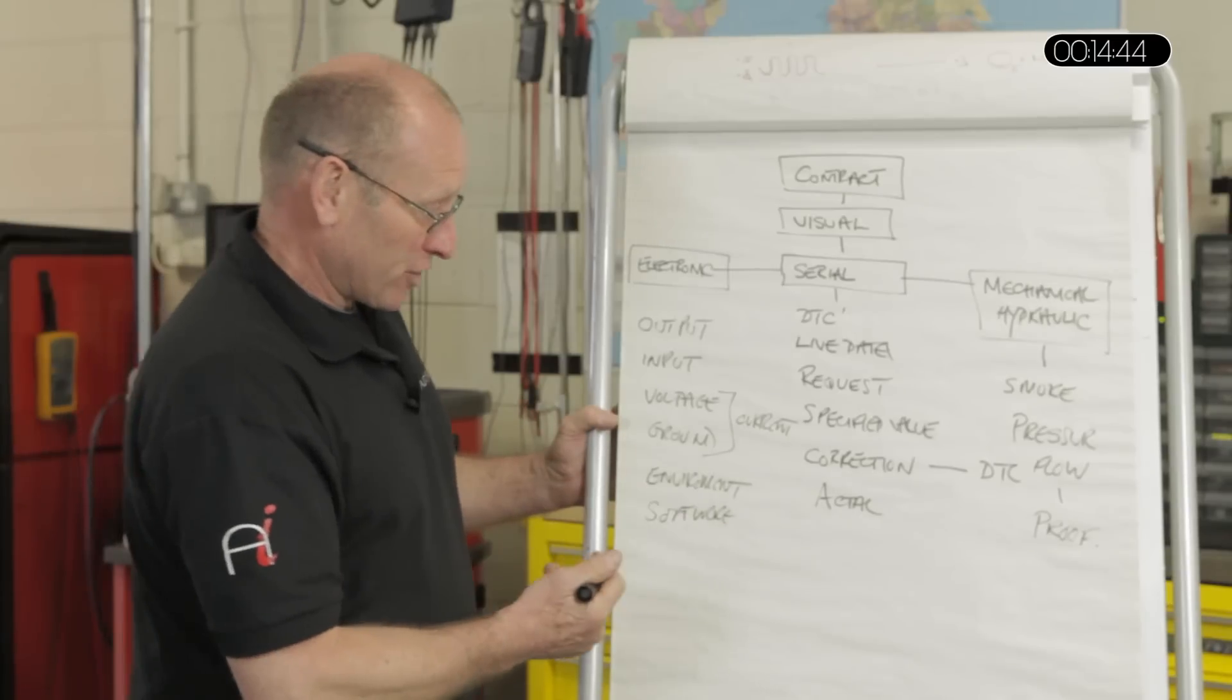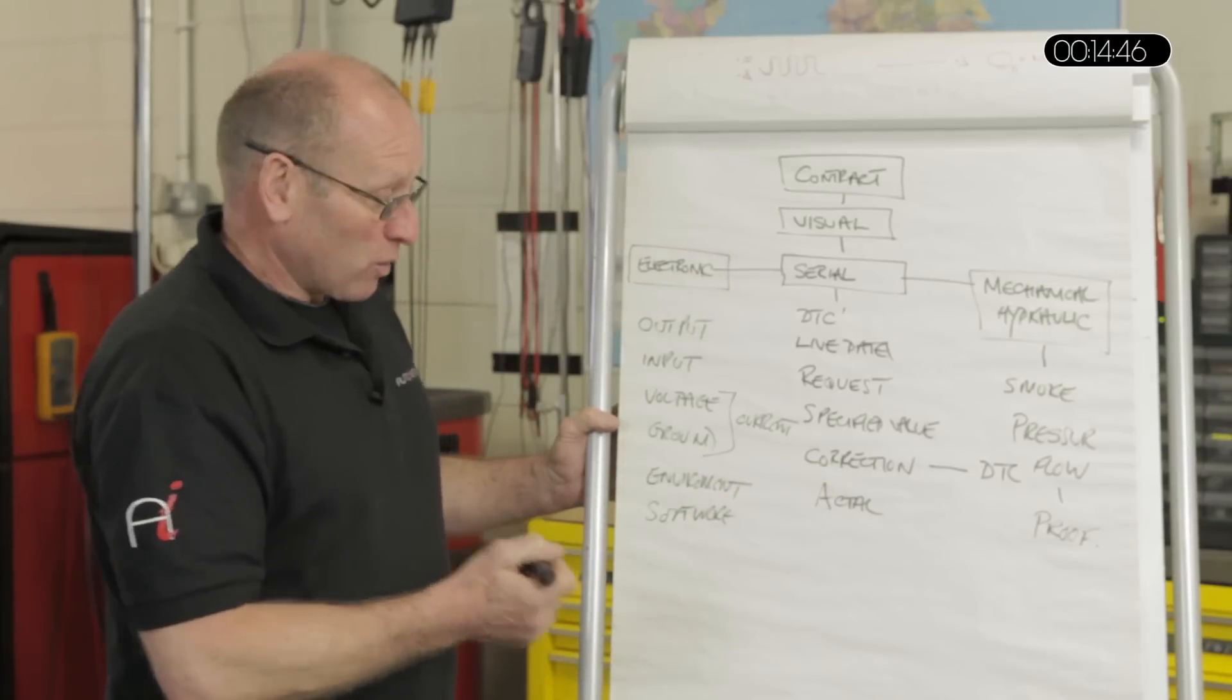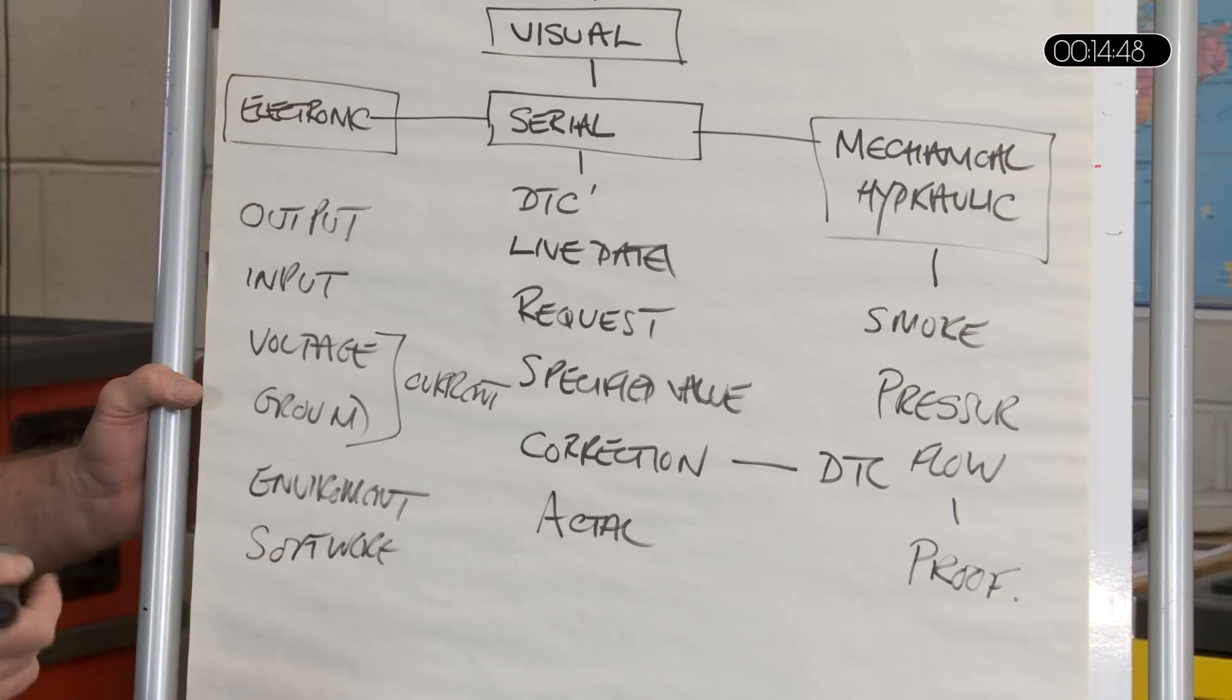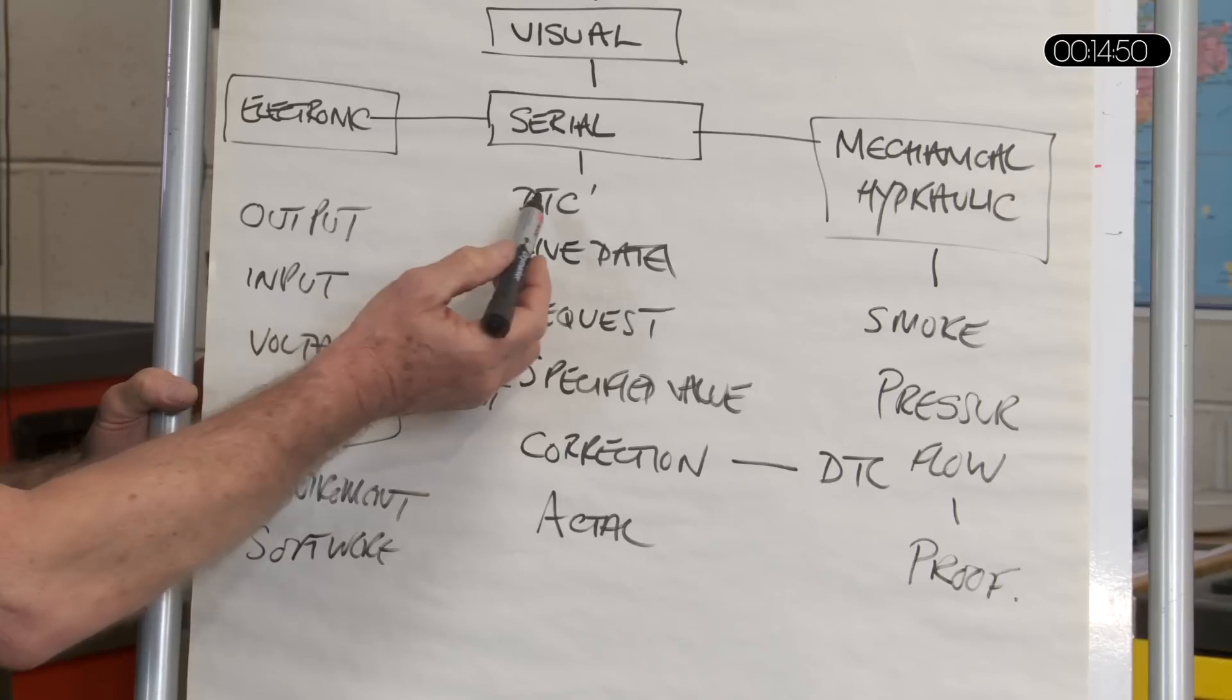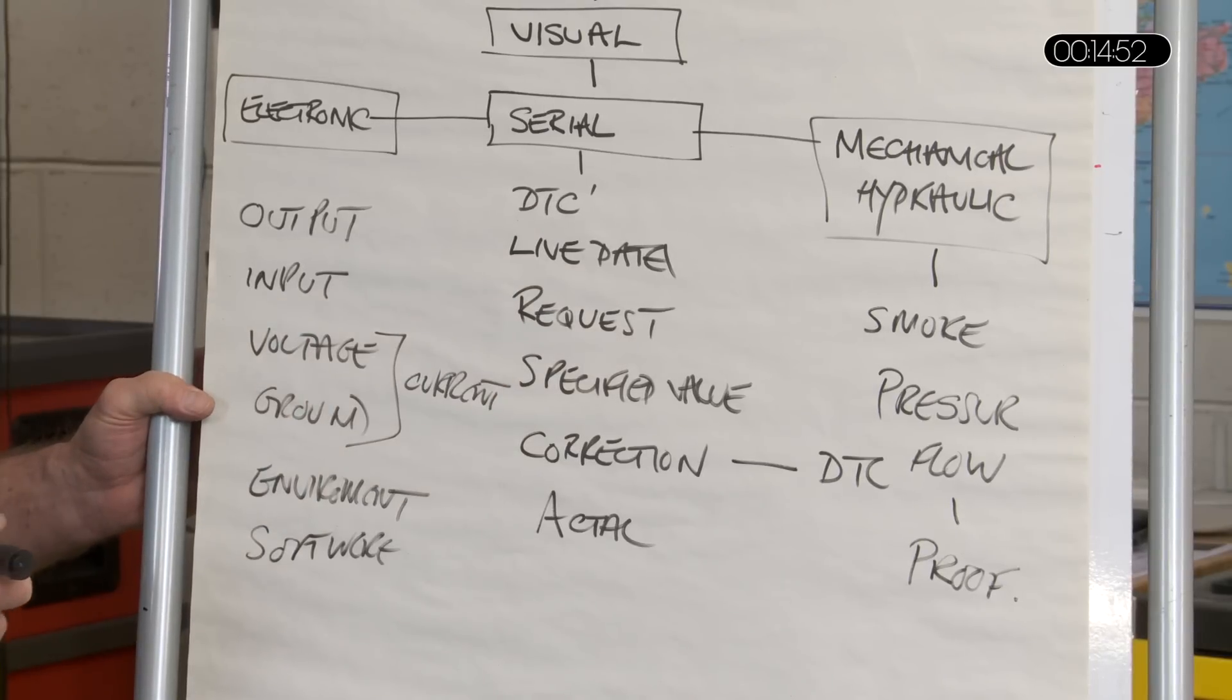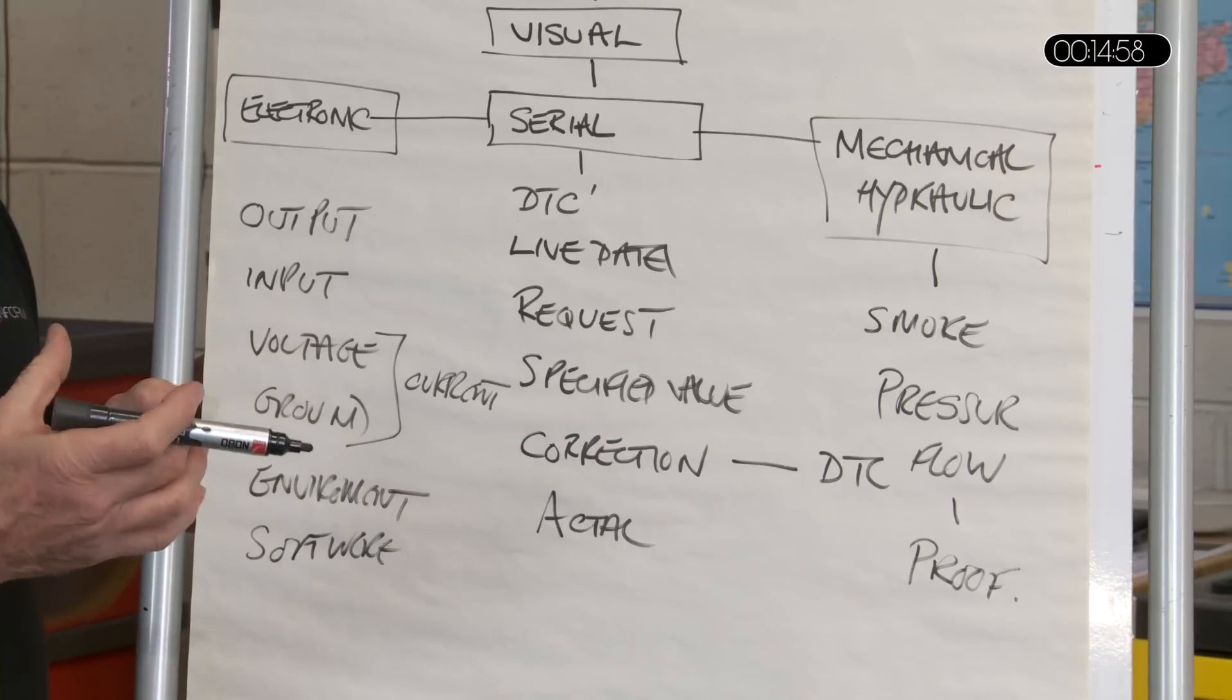In other words, it's gone beyond its adaption range. Correction couldn't cope. It's presented a DTC suggesting a faulty EGR. We've identified the DTC. We've done a smoke test to prove that the EGR valve actually is faulty or perhaps part of its electronic functionality is faulty. Maybe it's the current problem through the actual solenoid.